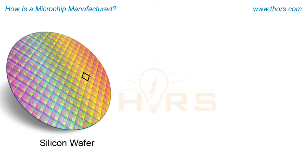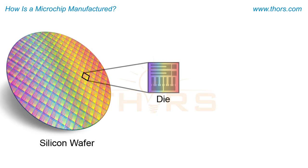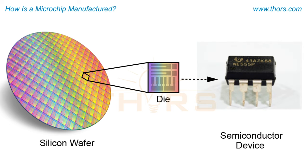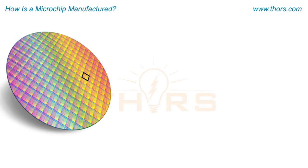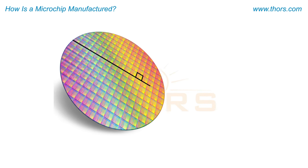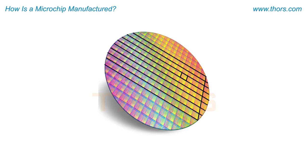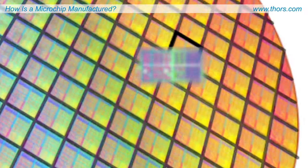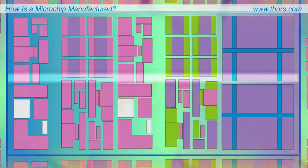A die is a small independent area of a wafer that can be processed and transformed into a semiconductor device, also referred to as a chip or microchip. One silicon wafer can hold hundreds of chips, and the number of chips that can be fabricated on a wafer depends on the complexity of the design.